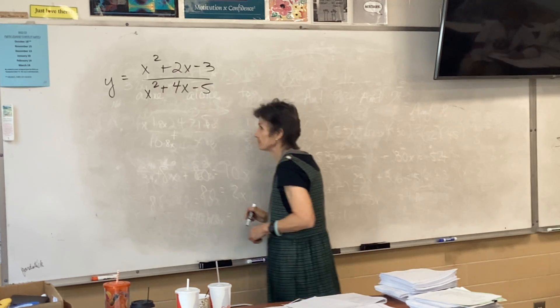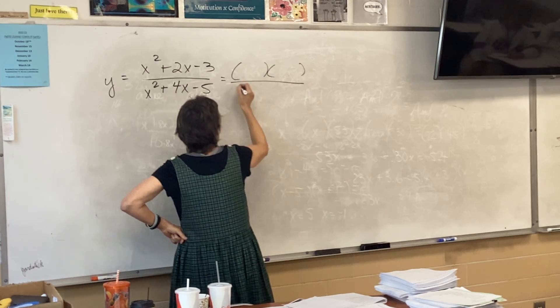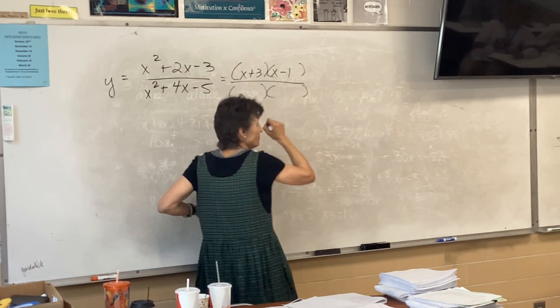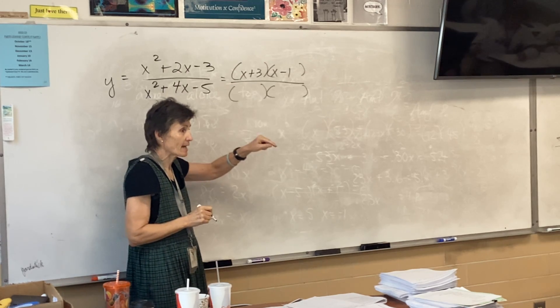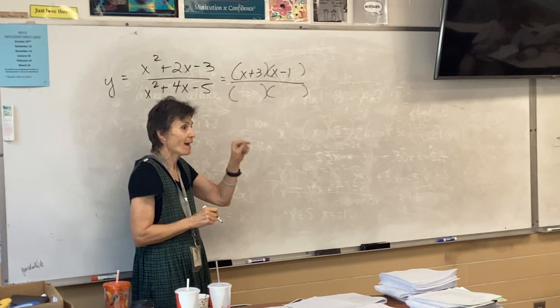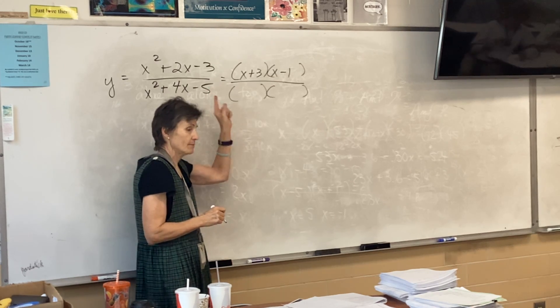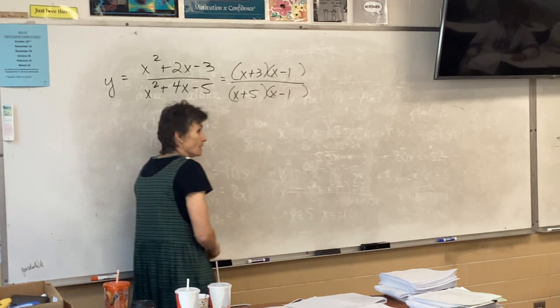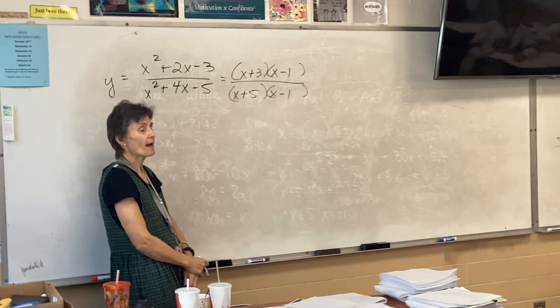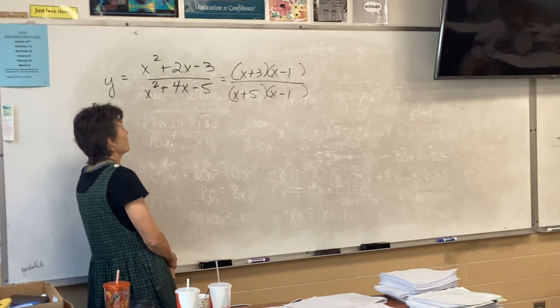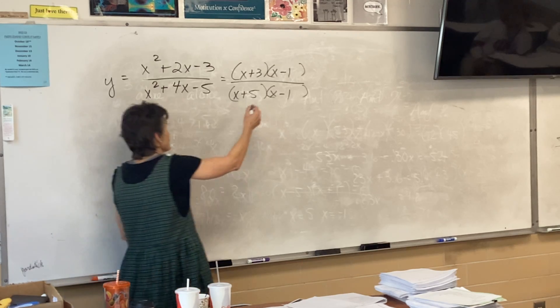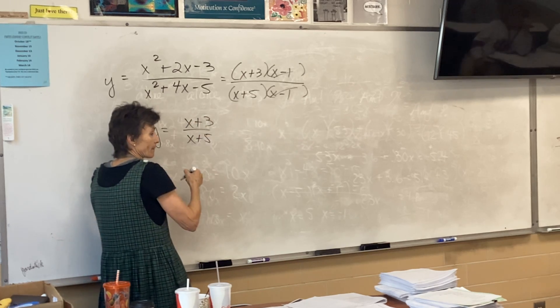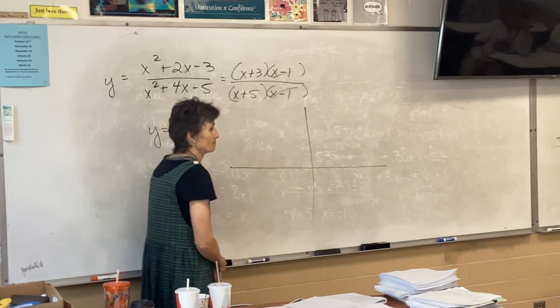And how does it factor? Top would be x plus three times x minus one. When you take that guess and you write that down, what is the next thing you're going to do? Check it. Then what's the bottom? x plus five times x minus one. These will cancel, so our equation is simply x plus three over x plus five.